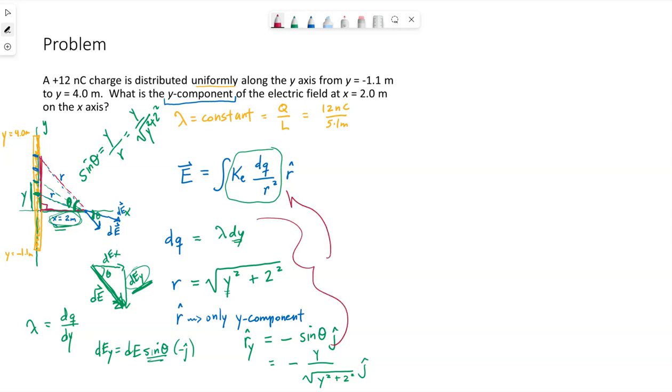So pulling all of this together, the y-component of the electric field will be the integral of k is our constant, dq is lambda dy, by r is the square root of y squared plus 2 squared, that r is squared, times this sine of theta term, which we found to be negative y over the square root of y squared plus 2 squared. That gives us the y-component.